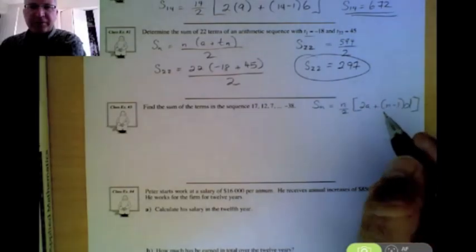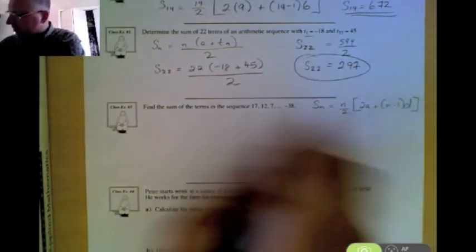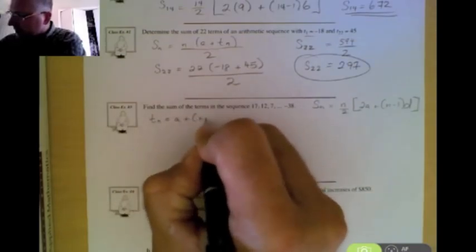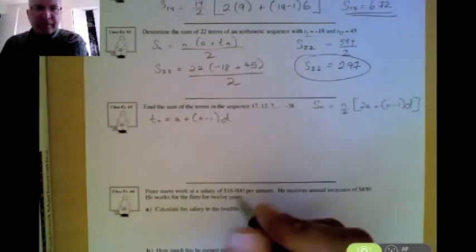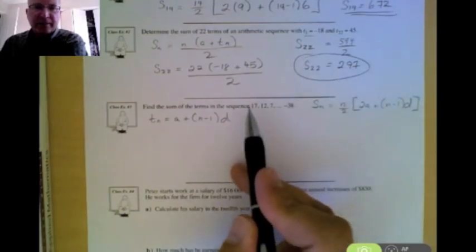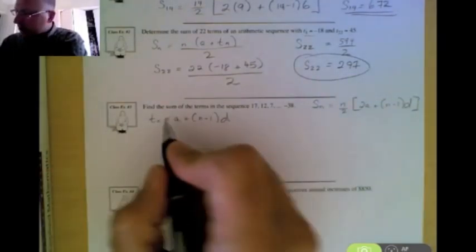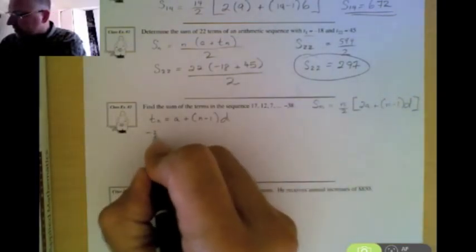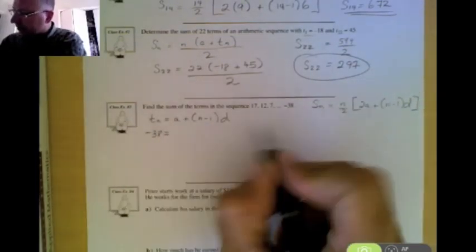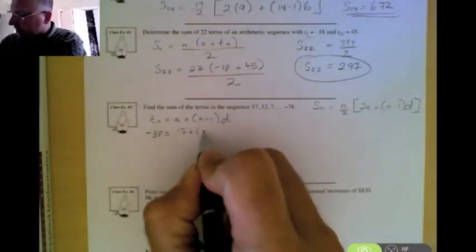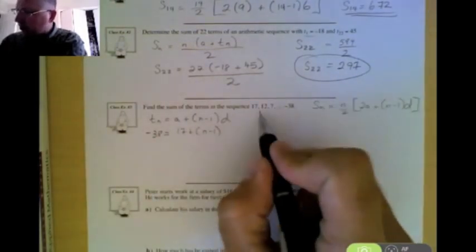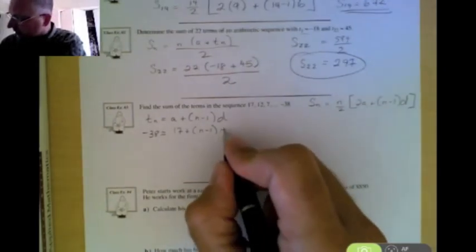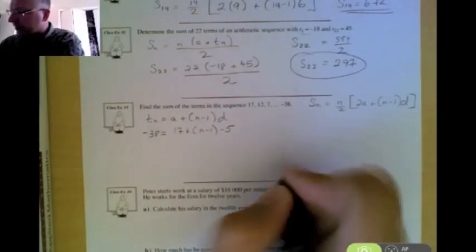So we have to go back and we have to learn something we learned used in arithmetic sequences. We learned in arithmetic sequences that you can use your T of n formula to find out the number of terms in a particular sequence. So T of n is the last term in the sequence, and in this case, it's negative 38. The first term is 17, and we're going to solve for n. The common difference here, if you look, you're subtracting 5 each time. So the common difference is negative 5.